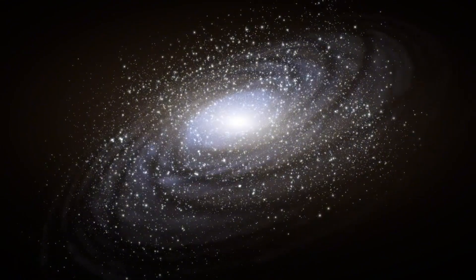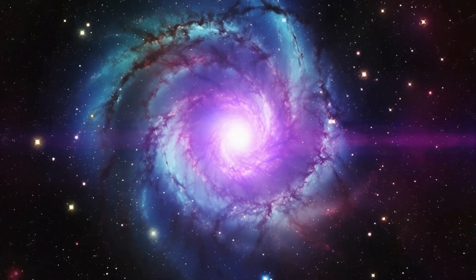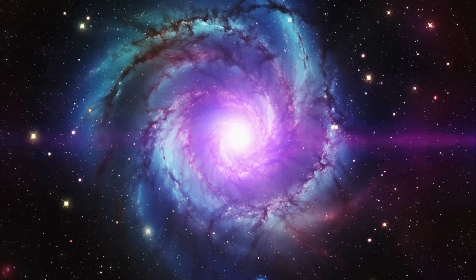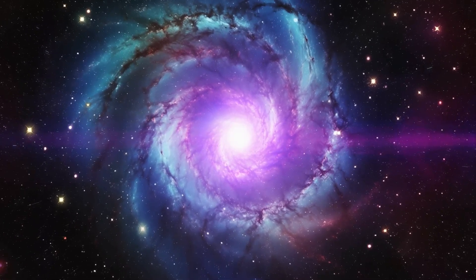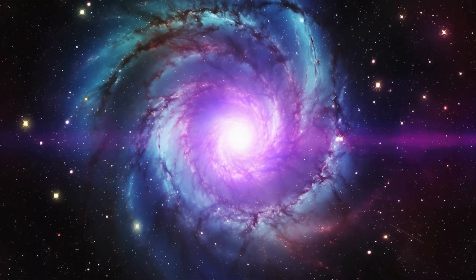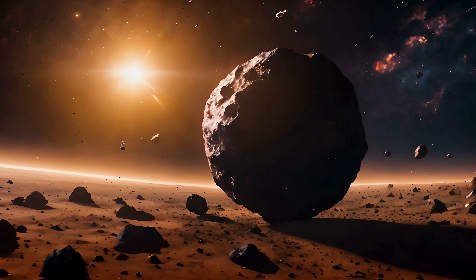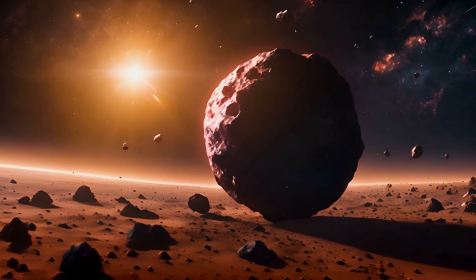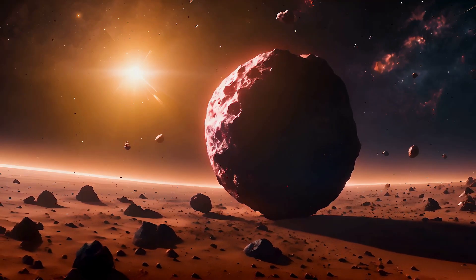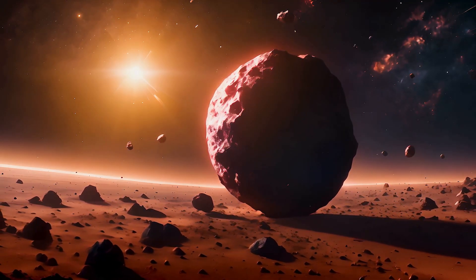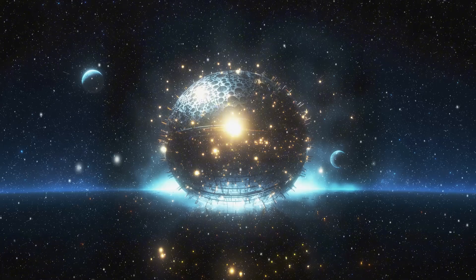Its position in the habitable zone means it could potentially have conditions for life as we know it. Proxima b's proximity also makes it a viable target for our search for life beyond Earth. With it being just 4.2 light-years away, it's an ideal candidate for interstellar missions. Imagine the possibility of exploring this Earth-like exoplanet.